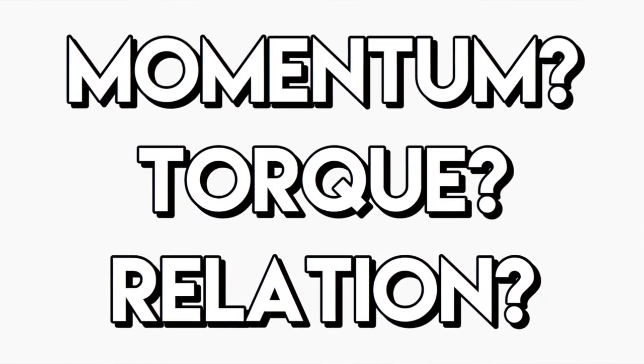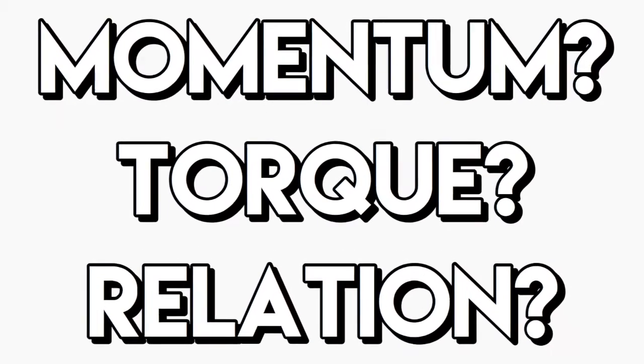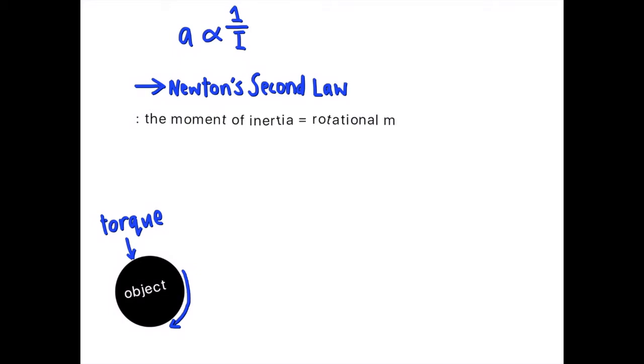Firstly, how are momentum and torque related? When a torque is applied to an object, it begins to rotate with an acceleration inversely proportional to its moment of inertia. This relation can be thought of as Newton's second law of motion. The moment of inertia is the rotational mass and the torque is the rotational force.